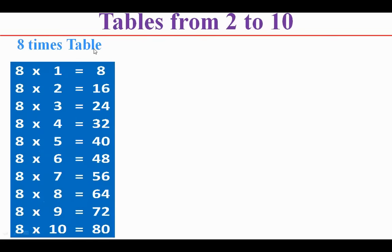8 times table: 8 1s are 8, 8 2s are 16, 8 3s are 24, 8 4s are 32, 8 5s are 40, 8 6s are 48, 8 7s are 56, 8 8s are 64, 8 9s are 72.